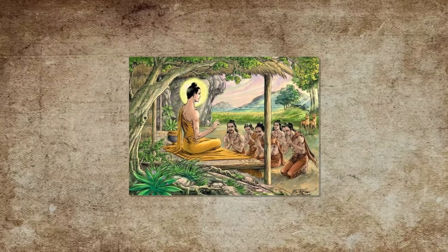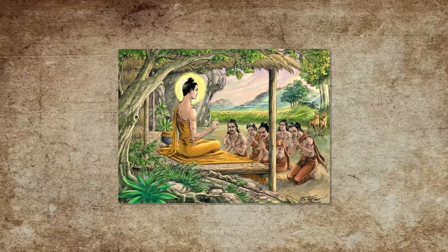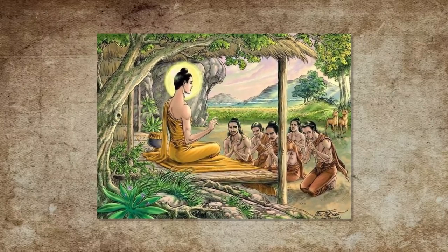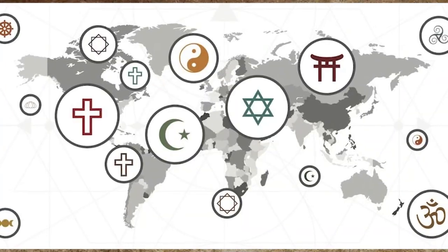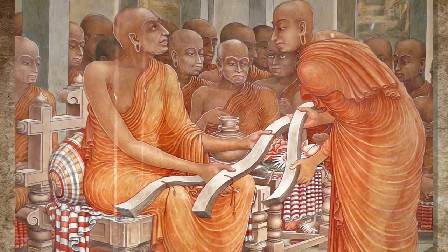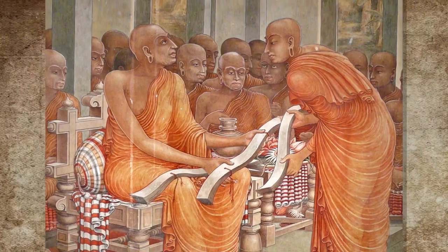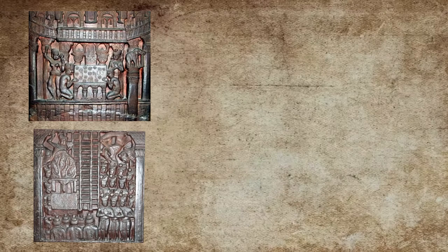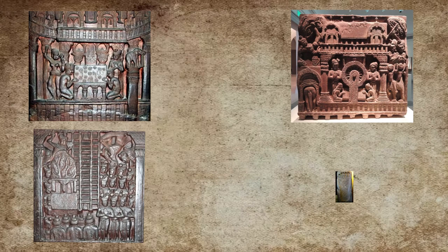A question that comes to mind is: why didn't the earliest Buddhists depict him? Which of course has an easy answer. Just like every other religion, Buddhism also went through an aniconic period, which means that the earliest Buddhists represented him with different objects — such as an empty throne, a Bodhi tree, a dharma wheel, a footprint, or a horse without a rider.